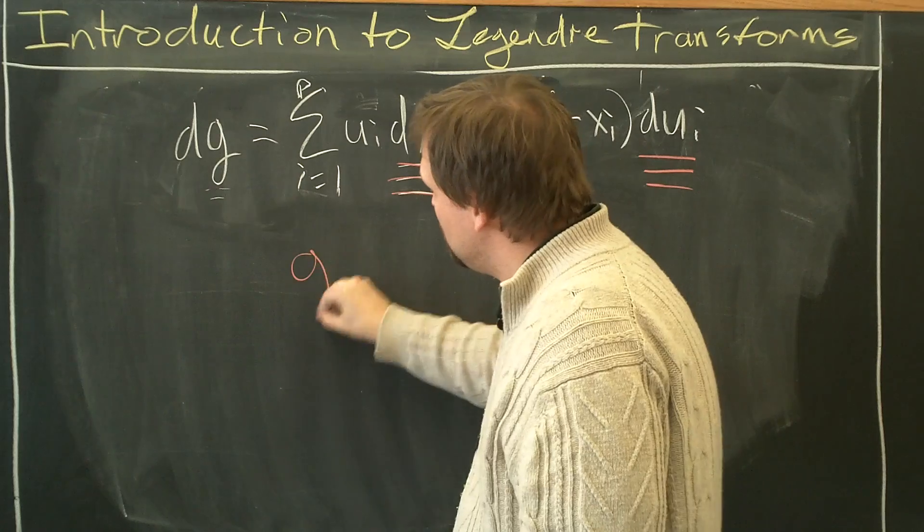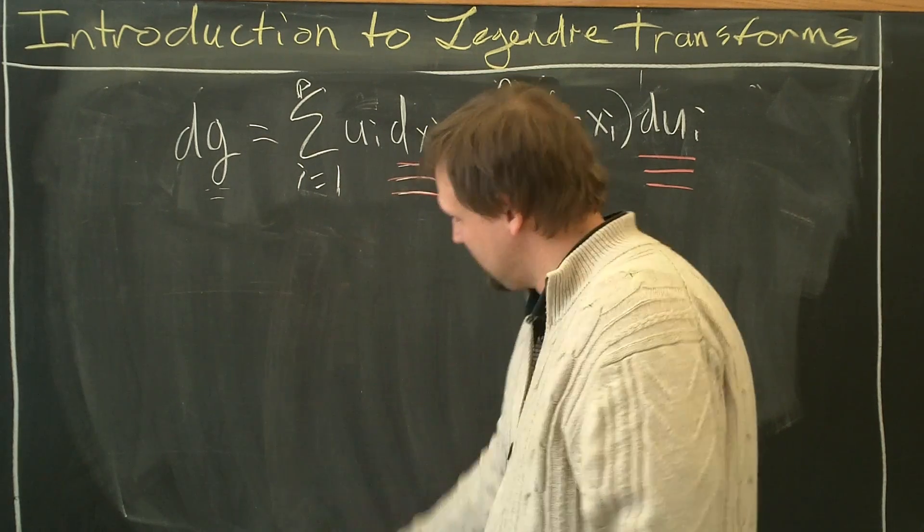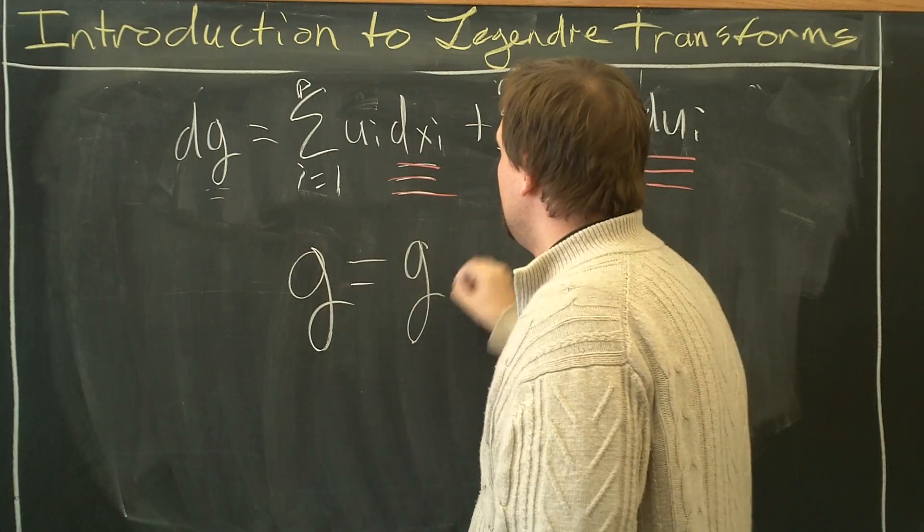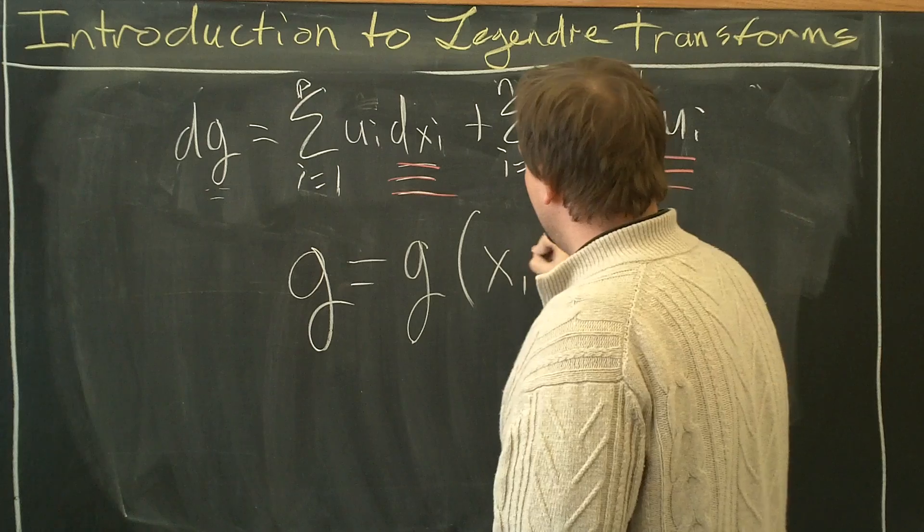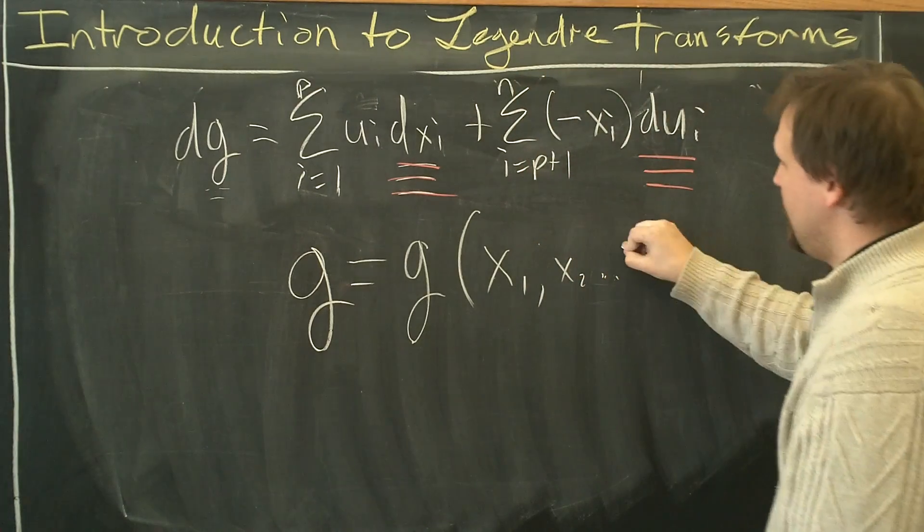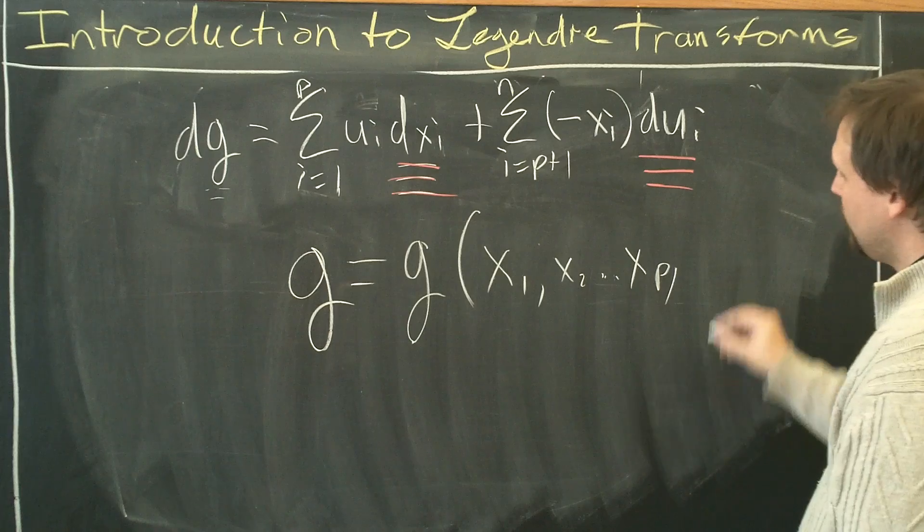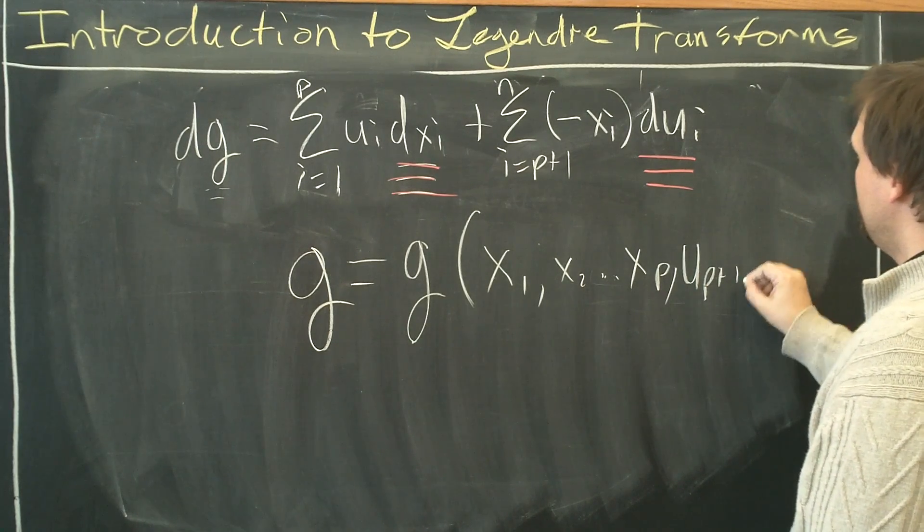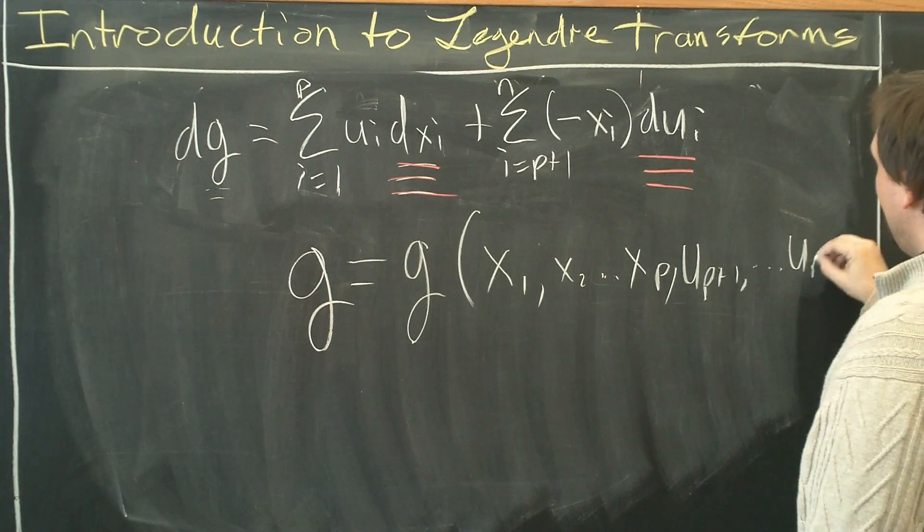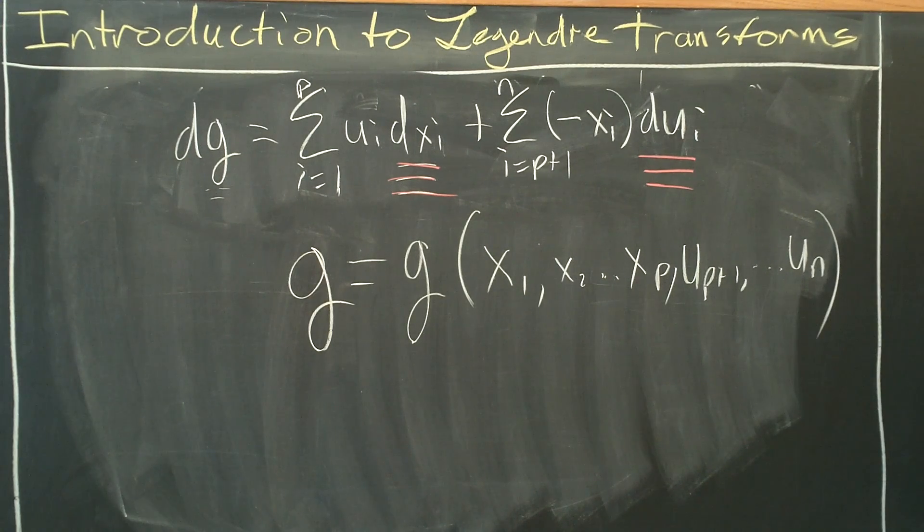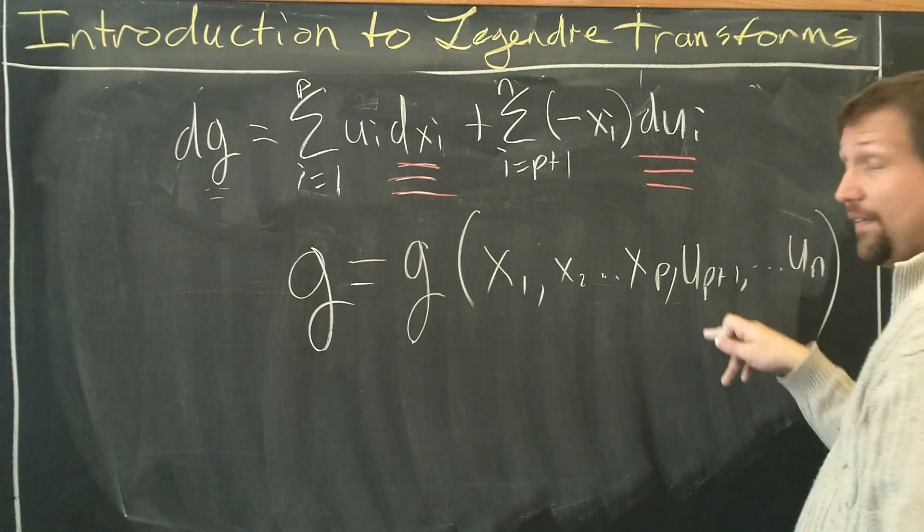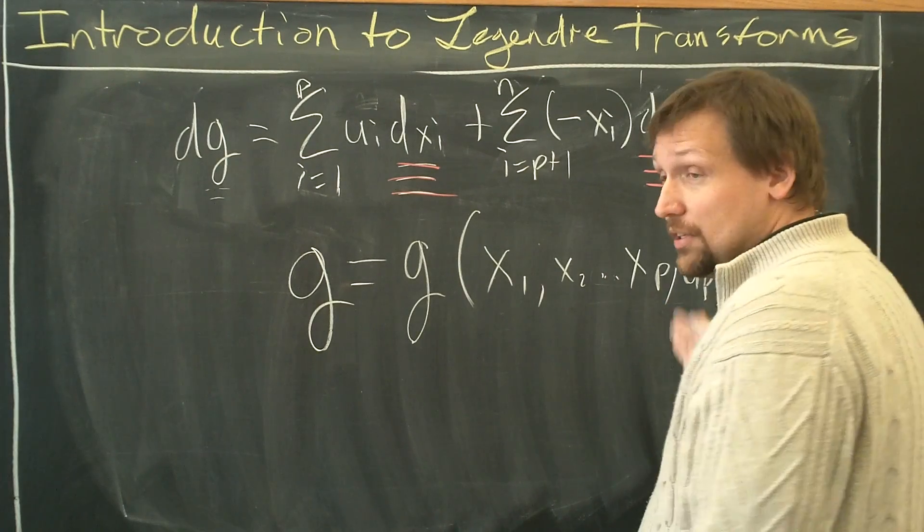So we can write this as g. Let me make that in white so that it's actually easier to see. g equals g of x1, x2, up to xp, then it goes into depending on up plus 1 to un. So g is a natural function of now x1, x2 all the way up to xp and then the new variables up plus 1 up to un.